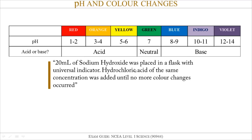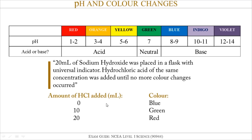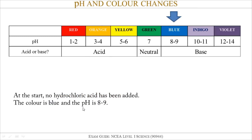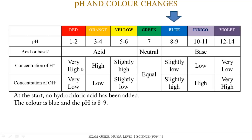Here's our question again: 20 mils of sodium hydroxide in a flask with some indicator and we're adding hydrochloric acid. Here's our observation table. At the start, zero mils of acid have been added and the color is blue, so I'm starting on the blue part of the pH scale. I'm going to finish at red, as shown in that table. The first thing I would write is: at the start, no hydrochloric acid has been added, the color is blue, and the pH is 8 to 9 — just restating what's given in the table.